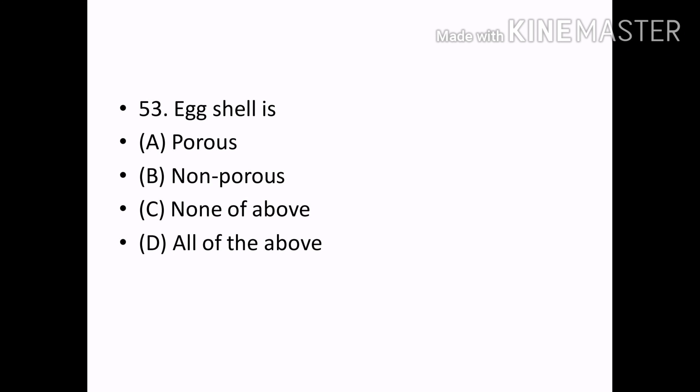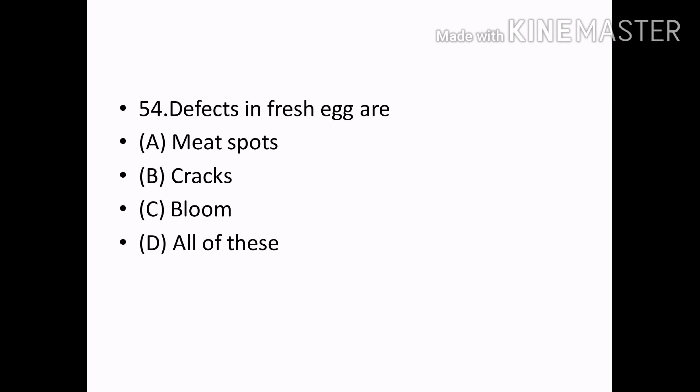Excellies (shellfish): Options — Forest type, Non-forest, None of the above, All of the above. Correct answer: Option A — Forest type. Defects in fresh leather: Options — Meat spots, Cracks, Bloom, All of these. Correct answer: Option D — All of these.